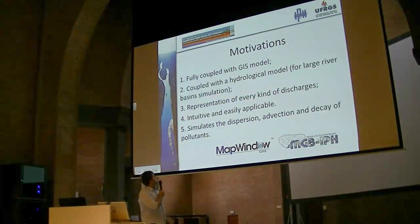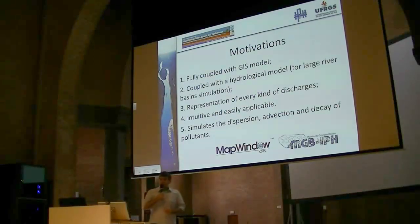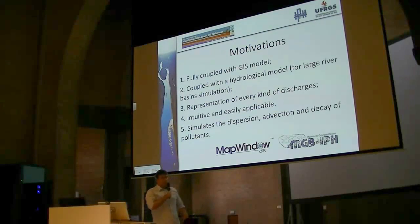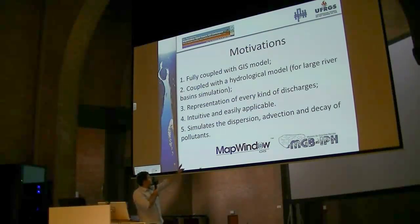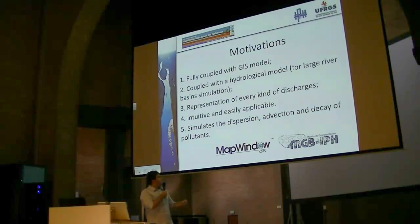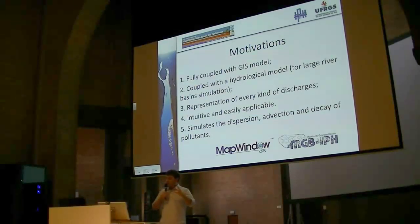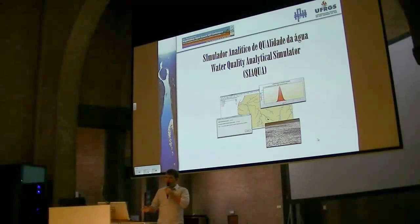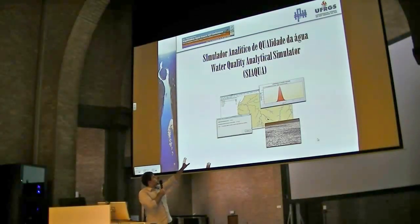We want to create a model that is fully coupled with GIS — in this case with MapWindow — coupled with a hydrological model that we work with in Brazil. The model is designed for large river simulations. It represents every kind of discharge, like a spill or a continuous discharge. It's intuitive and easy to use, and it represents every kind of dispersion, expansion, and decay of pollutants in rivers. The model we are developing is called Water Quality Analytical Simulator. In Portuguese, the acronym is SeaAqua.